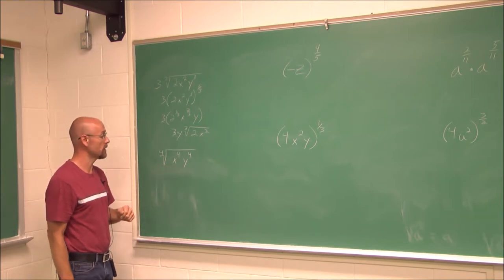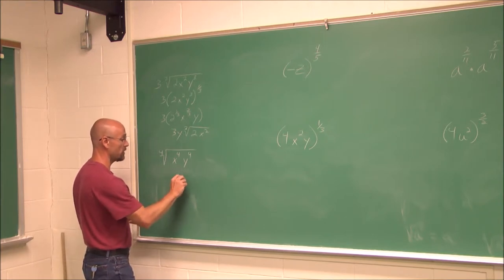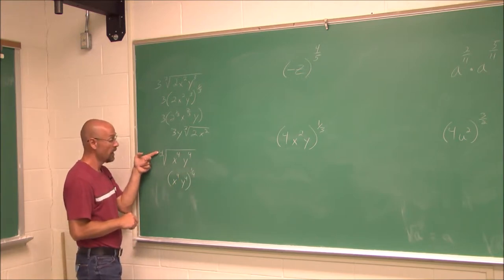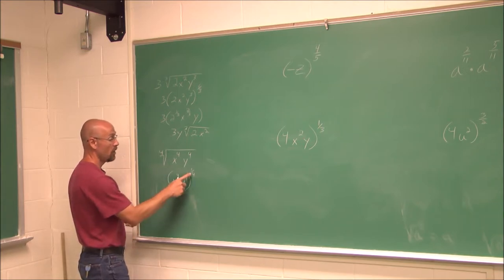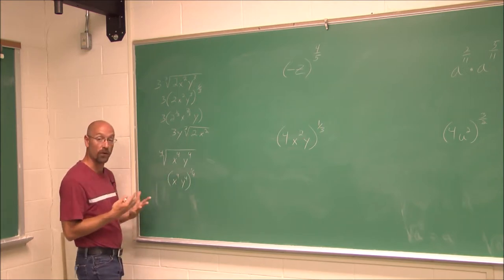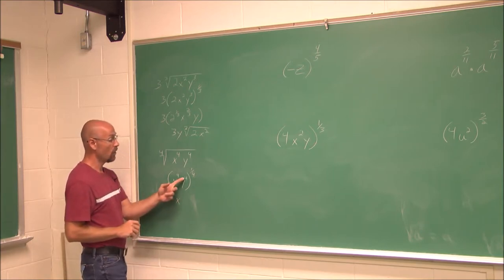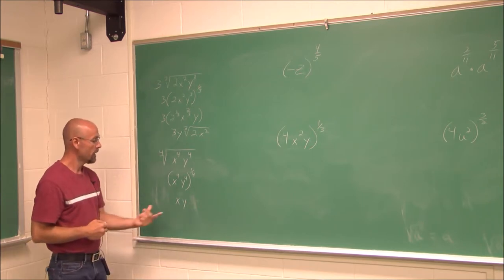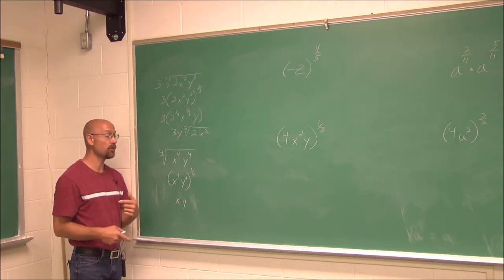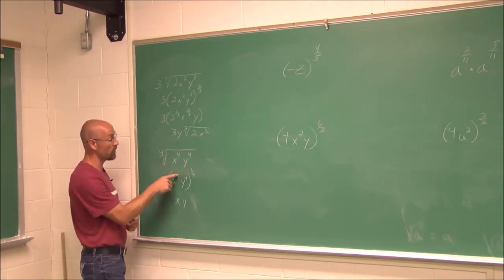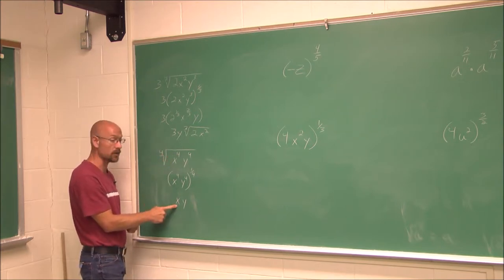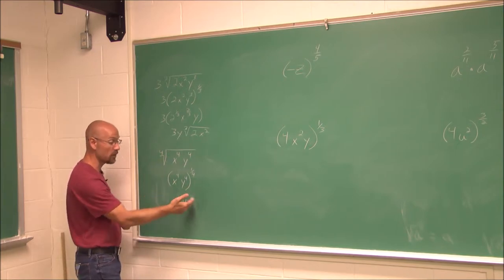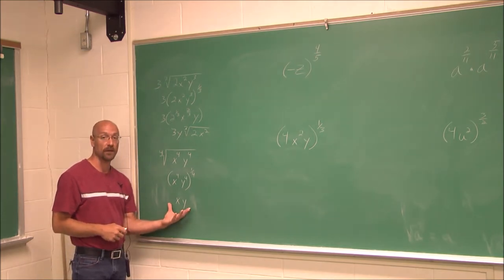We can do the same with the 4th root of x⁴y⁴: write it as x⁴y⁴ raised to the 1/4 power. Using the power rule, 4 times 1/4 gives x to the 4/4, which is just x. And y to the 4/4 is just y. So the simplified answer is xy. Essentially, 4 goes into 4 one time for each variable — nothing remains under the radical, which is why no radical remains after simplifying.